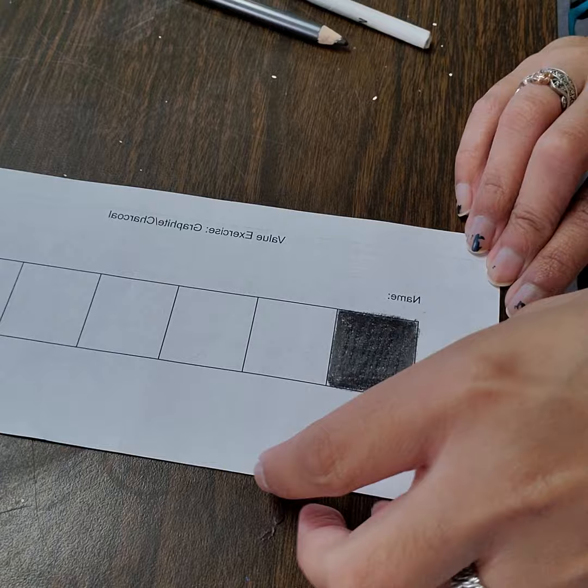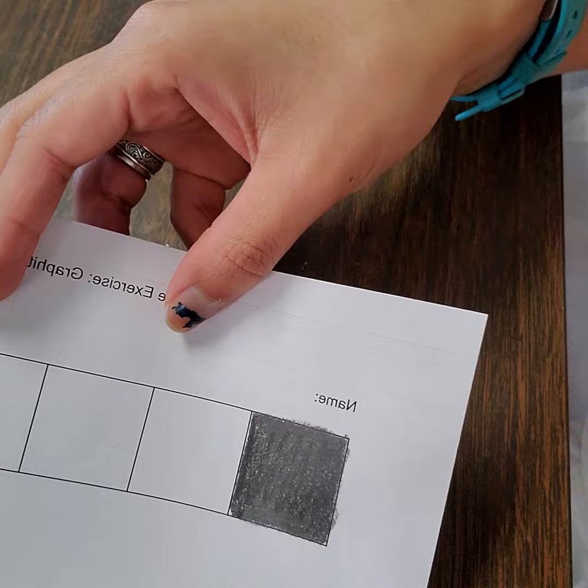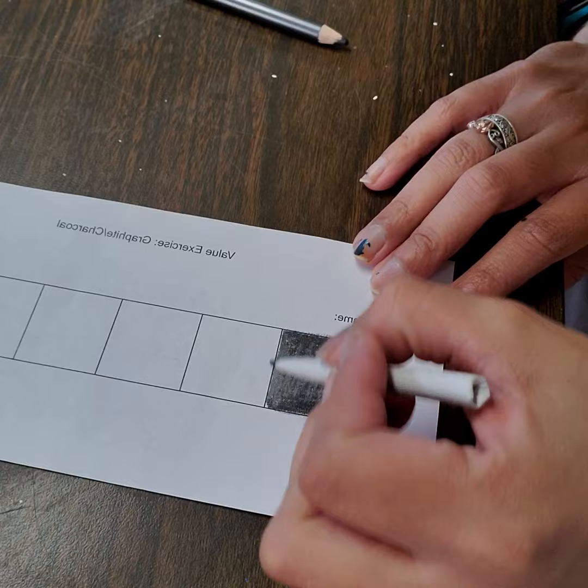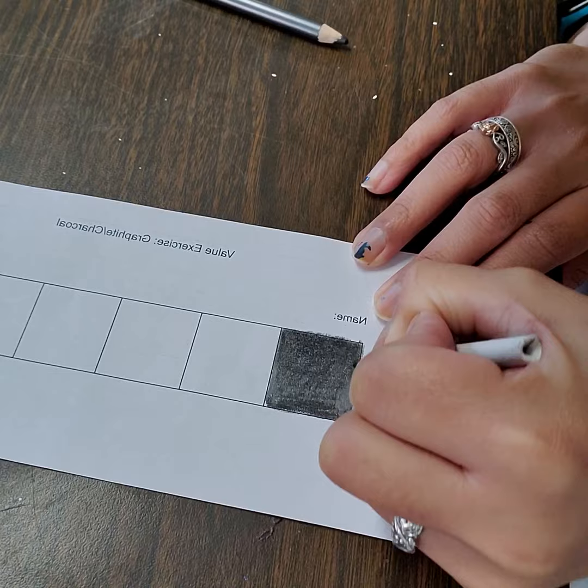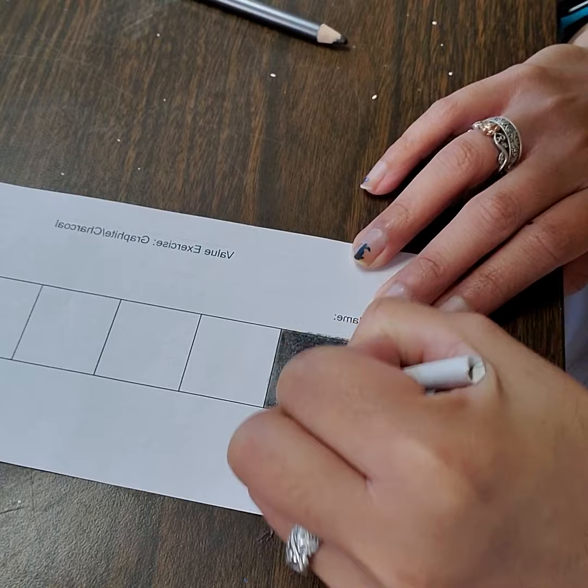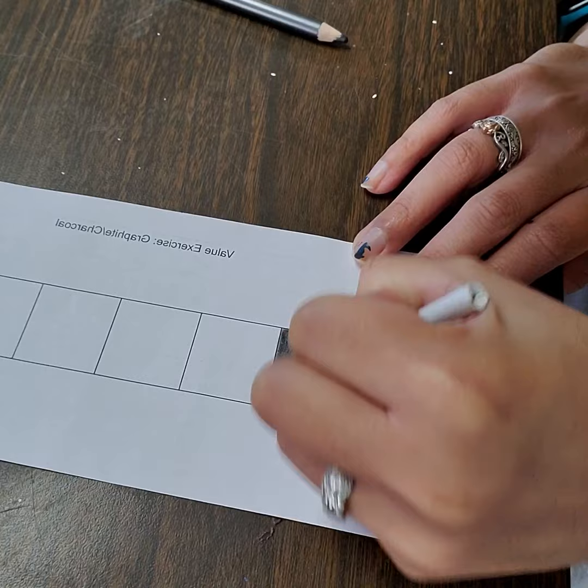If you blow on the residue it tends to smear things, so do be careful of that. I'm going to take my tortillon here and I'm going to apply a gentle pressure on my square and I'm going to blend things to where I no longer have any more white showing through my square here. It's going to be a pretty dark square. Let me shake that off somewhere else, and there is my darkest dark so far.